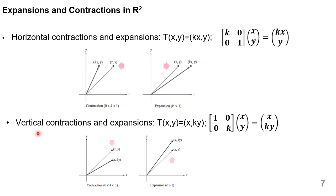Now we look into vertical contraction and expansion. Here we have taken the matrix [[1, 0], [0, K]] and multiplied with (x, y). We get the resultant coordinate (x, Ky). If the K value is between 0 and 1, we can see that it contracts. And if the K value happens to be greater than 1, we can see that it is going to stretch itself or get expanded.